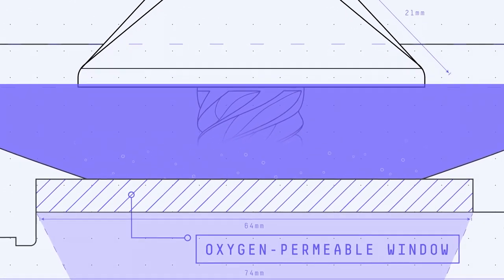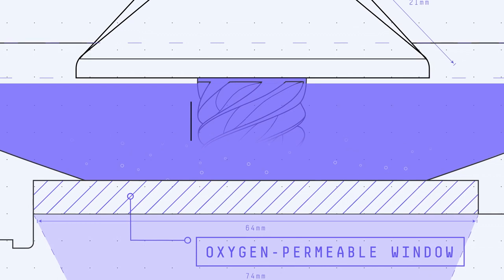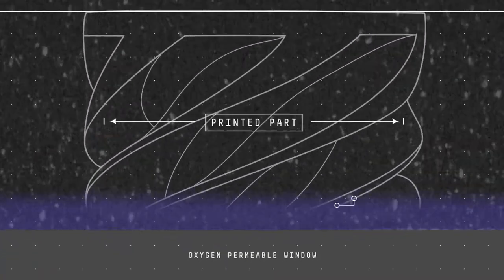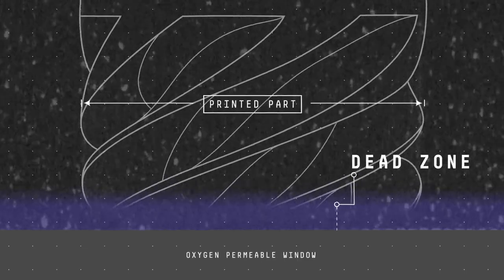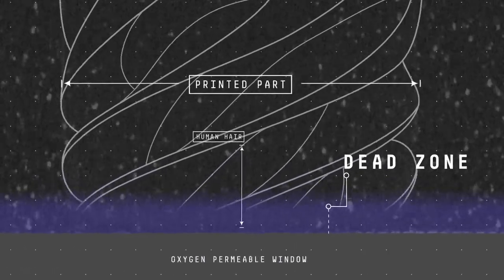Oxygen passes through the oxygen permeable window, creating a thin liquid interface of uncured resin between the window and the printing part, known as the dead zone. The dead zone is only a third of a human hair thick.